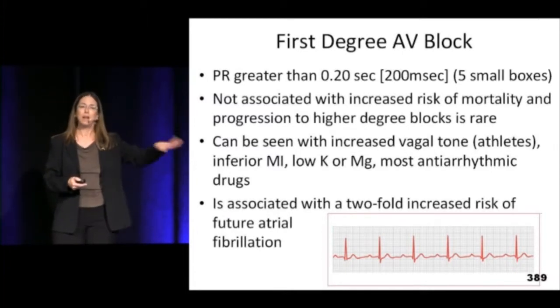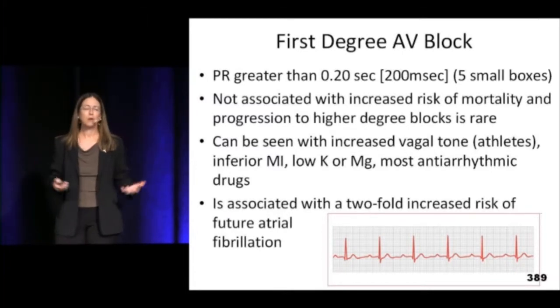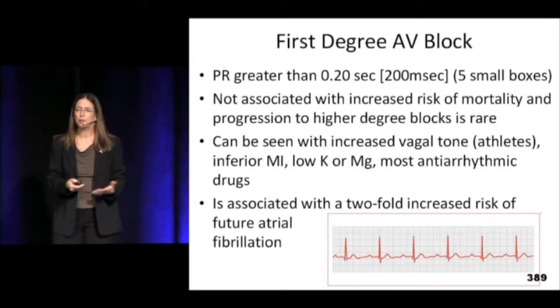First degree AV block may, down the line, mean you're more likely to develop something like AFib in the future if you're a couch potato. But probably not. Look for a few electrolyte problems that can cause it — magnesium in particular. Overall, first degree AV block isn't that big of a deal. It doesn't really cause that much trouble. It's more of a 'wow, that's interesting — let's move on' kind of finding.